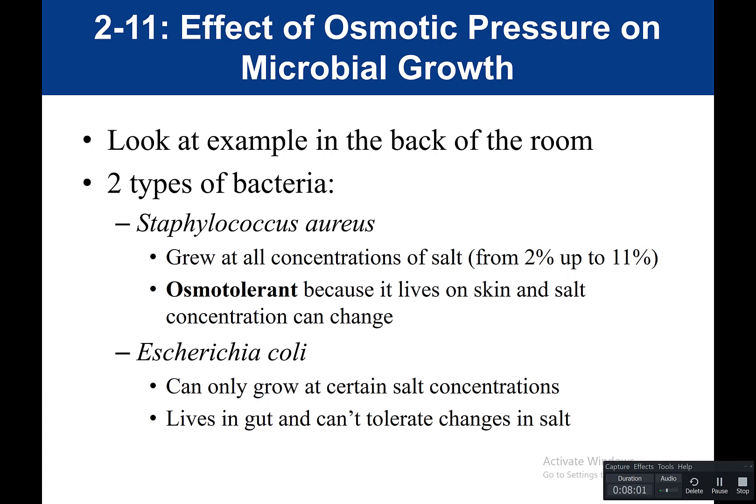Salt concentrations affect how water moves. If salt concentrations are too high, that creates a hypertonic environment outside the cell, causing water to leave the cell, leading to plasmolysis — the cell shrivels up. Certain bacteria have adaptations that allow them to live across a greater range of salt concentrations. We call those organisms osmotolerant — they're able to tolerate changes in osmotic pressure, meaning they can grow under different salt conditions.